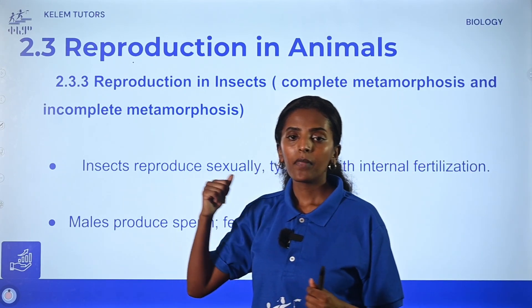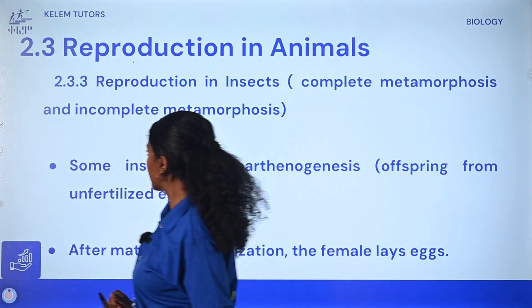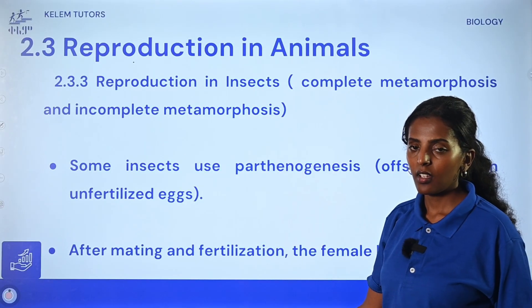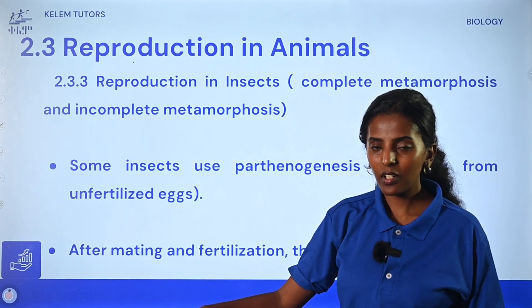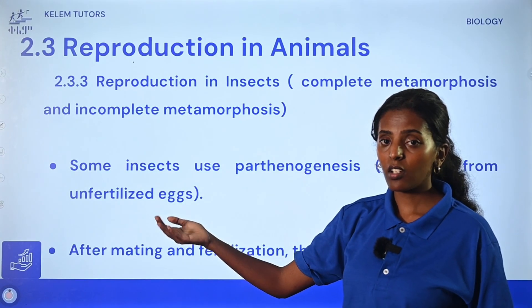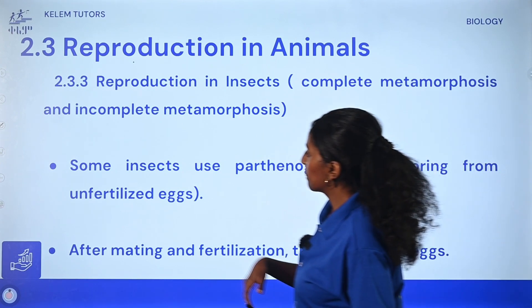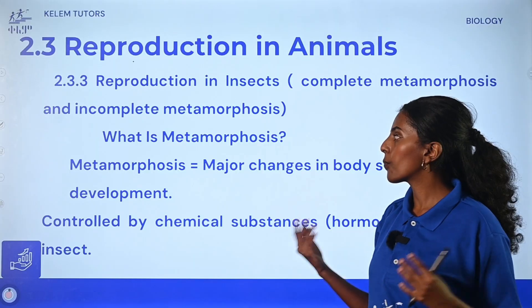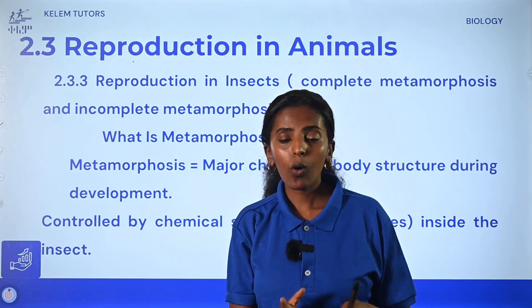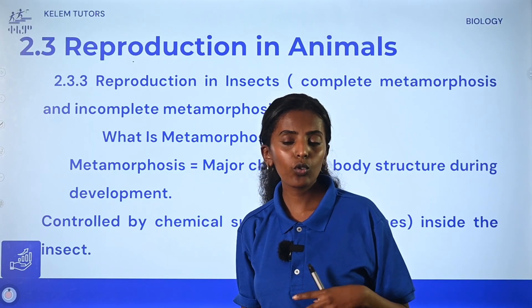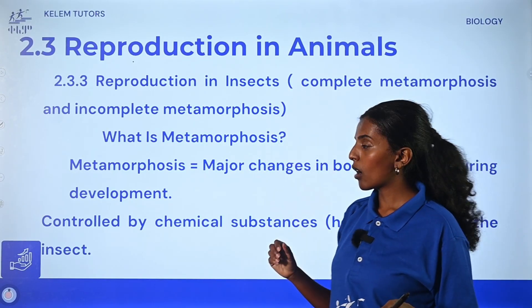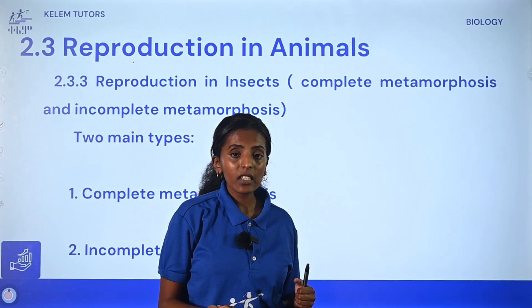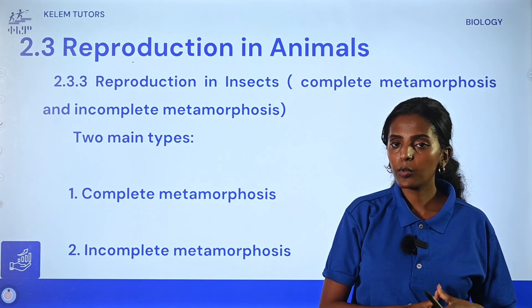Under metamorphosis, some insects may also use parthenogenesis, which is a form of asexual reproduction. Metamorphosis is regulated by chemicals and happens over a matter of time. There are two types of metamorphosis: complete and incomplete. The difference between them is the number of stages — complete metamorphosis has four stages, while incomplete metamorphosis has only three stages.